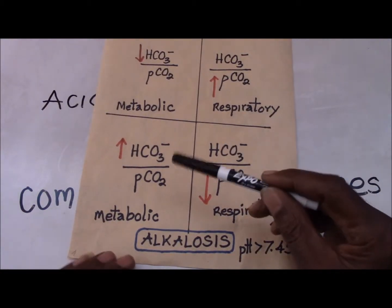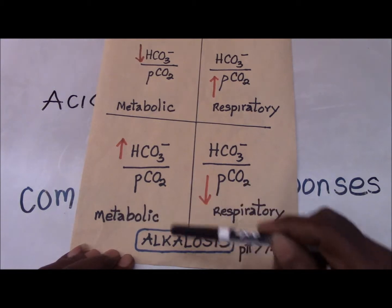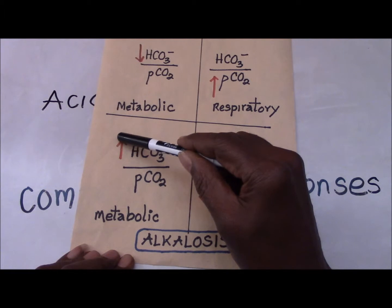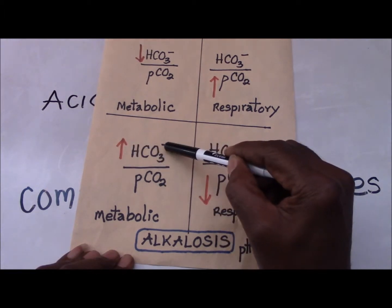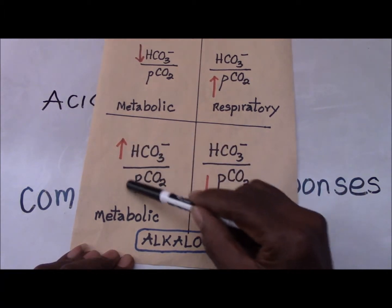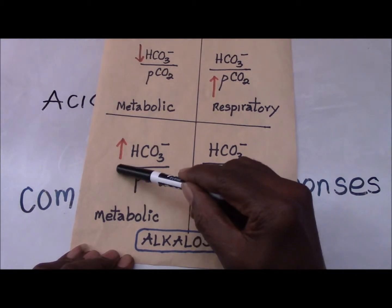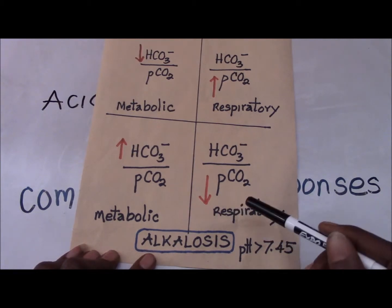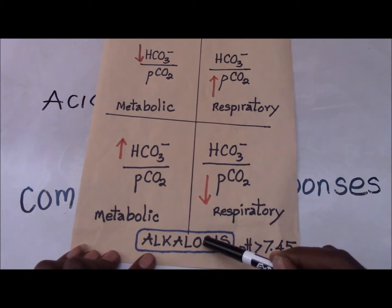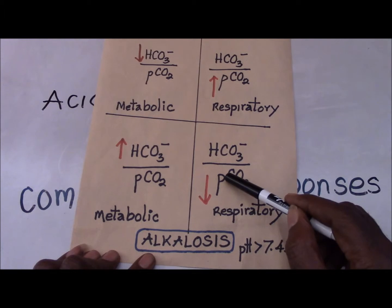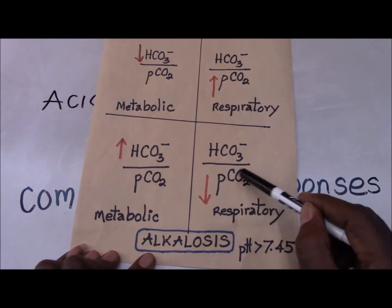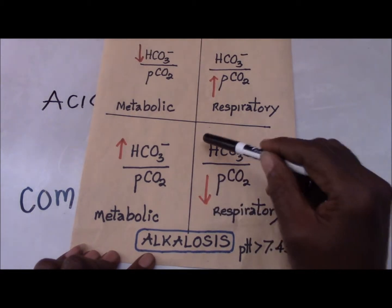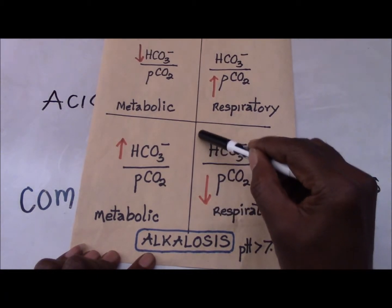Similarly, in the case of metabolic alkalosis, the major event is an increase in the bicarbonate ion, and the compensation will occur in the denominator — it will also increase in the same direction. In the case of respiratory alkalosis, the primary event is a loss of the partial pressure of carbon dioxide, and the compensation will occur in the opposite direction.